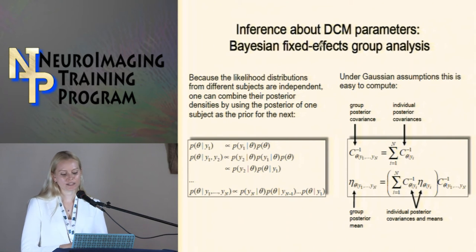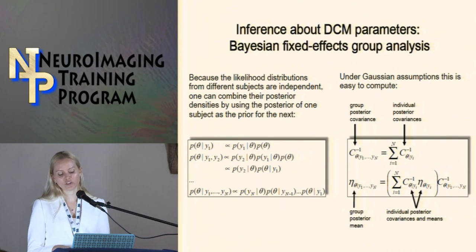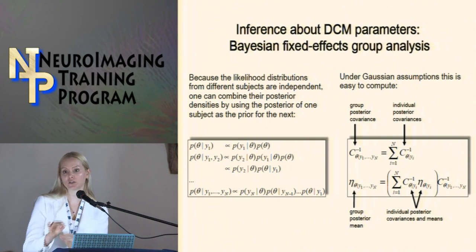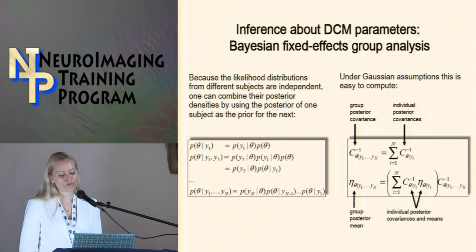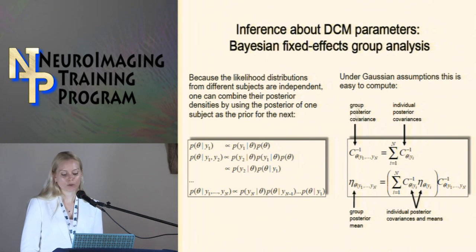For inference about DCM parameters across subjects, you can use Bayesian fixed-effects group analysis — combining posterior distributions. Because likelihood distributions from different subjects are independent, you can daisy-chain them: start with one prior, feed it into the next subject, and keep multiplying. Under Gaussian assumptions, this is straightforward to compute, yielding a group posterior covariance from individual posterior covariances and a group mean.